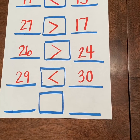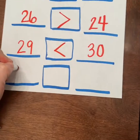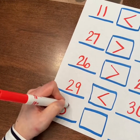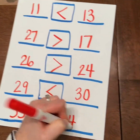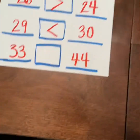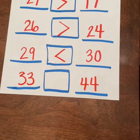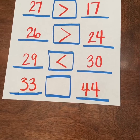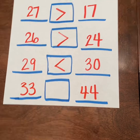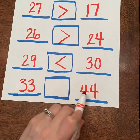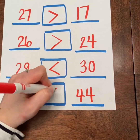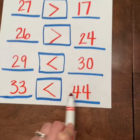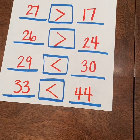Last one — 33 and 44. Write in the alligator's mouth for which one is greater. 44 is greater than 33, so if you're reading from left to right, 33 is less than 44. Good work everybody.